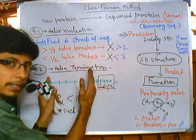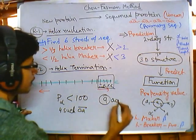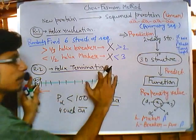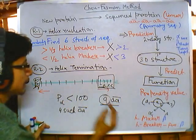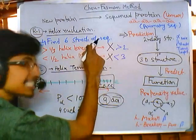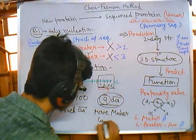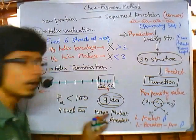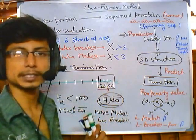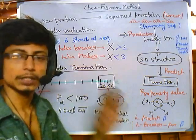Say we started with six random residues. After elongation in both directions, we now have nine amino acids. After elongation stops when propensity value of helix is less than 100, we get this nine amino acid stretch which has propensity value more than 100, more helix makers and fewer helix breakers. That means it will form alpha helix. So the alpha helix from this primary structure is formed by these nine amino acid sequences. These two major rules govern the conversion from primary to secondary structure.